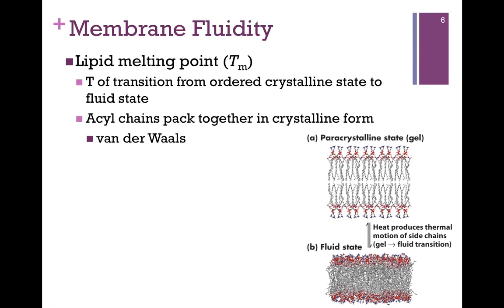The measure for membrane fluidity is the melting temperature, or TM. This is the temperature where we're transitioning from an ordered crystalline state — a more or less solid state — to a fluid state. We have these long hydrocarbon acyl chains interacting with each other through hydrophobic and van der Waals interactions. They pack together very tightly in crystalline form, as illustrated in part A of the figure, where you can see a very rigid structure and the dimensions across that bilayer are quite wide.